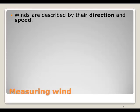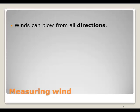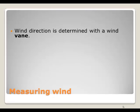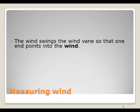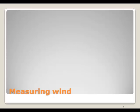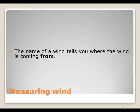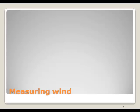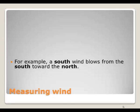Measuring wind: winds are described by their direction and speed, and they can blow from all directions. We measure wind speed and direction with a device called a wind vane. The wind swings the wind vane so that one end points into the wind. The name of the wind tells you where it came from — we always name winds based on the direction they are coming from. For example, a south wind blows from the south and toward the north.